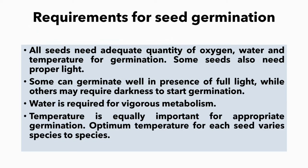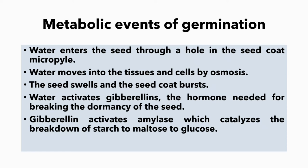The seed needs an adequate quantity of oxygen, water, and temperature for germination, and sometimes it needs proper light. Some seeds can germinate well in the presence of full light while others may germinate in the presence of darkness. Water is required for vigorous metabolism and temperature is equally important for appropriate germination. The optimum temperature for each seed varies species to species.